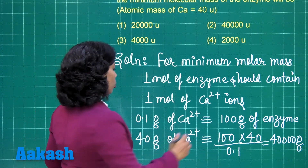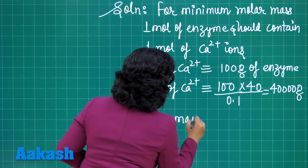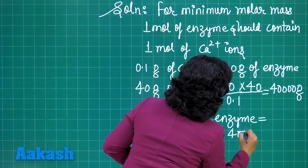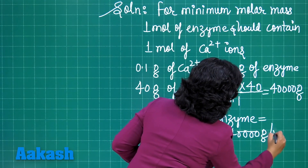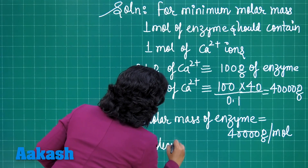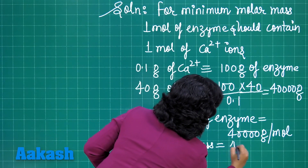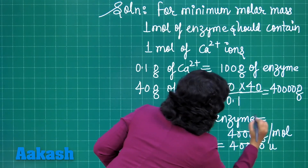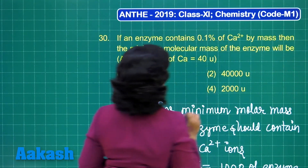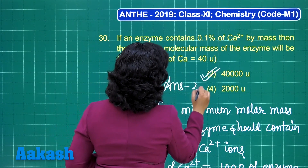That means the mass of the enzyme is 40,000 grams, so the molar mass of the enzyme would be 40,000 grams per mole, and the molecular mass of the enzyme would be 40,000 u. The correct answer is option 2.